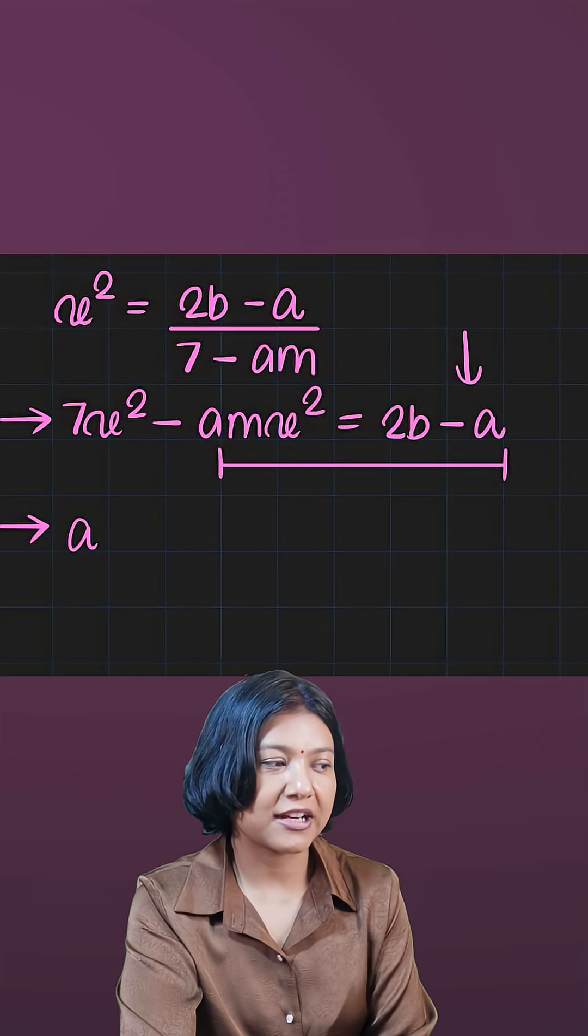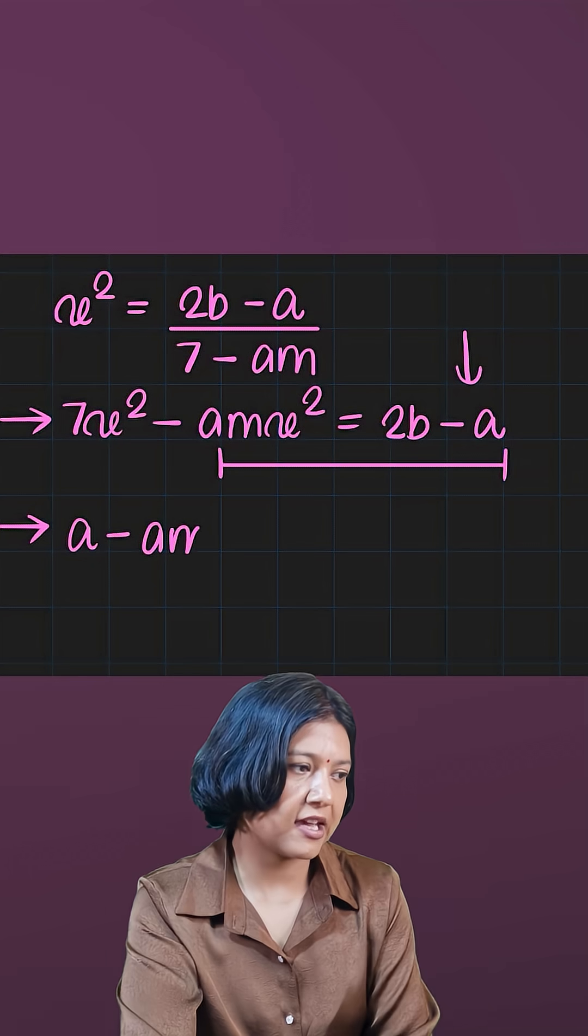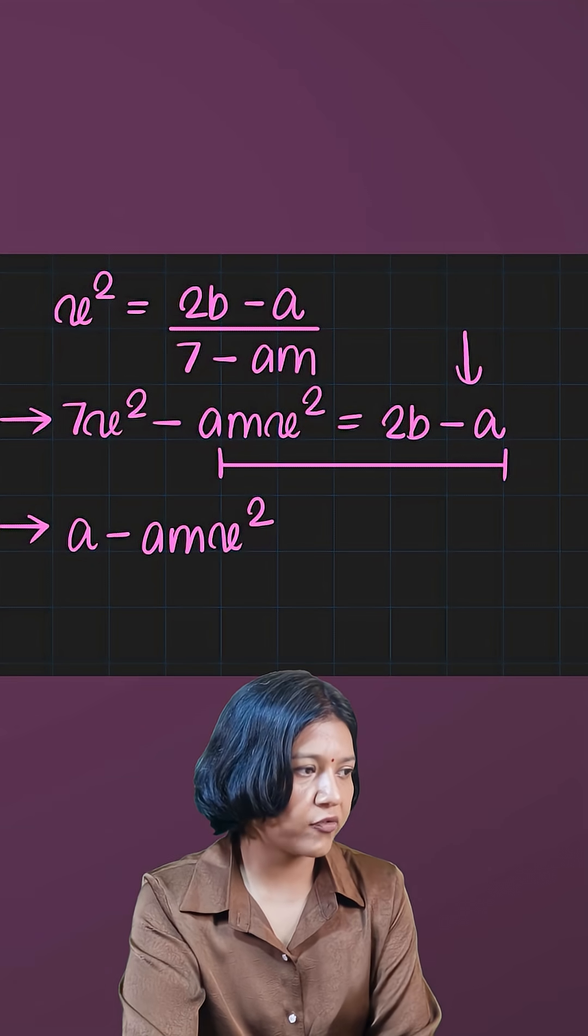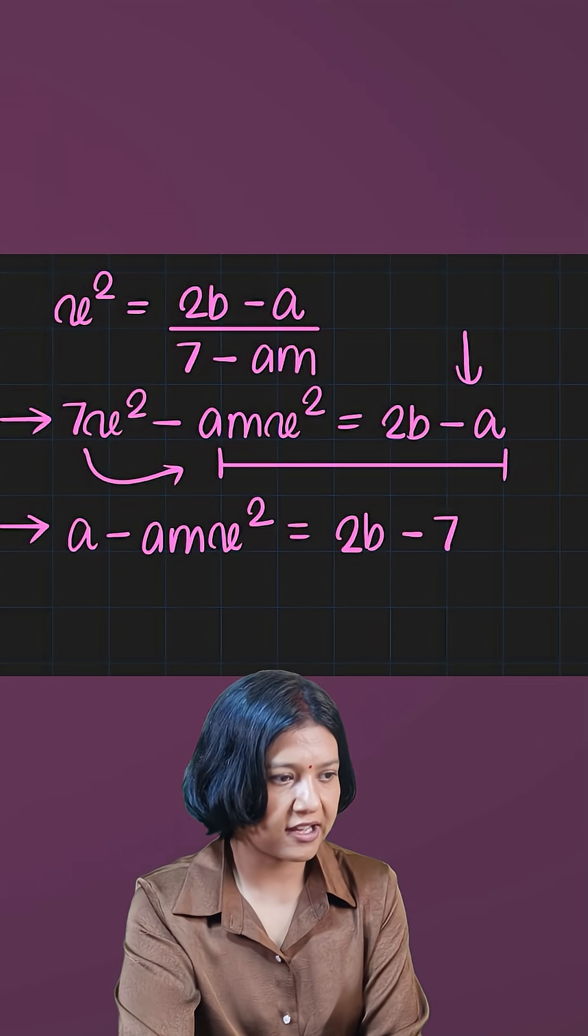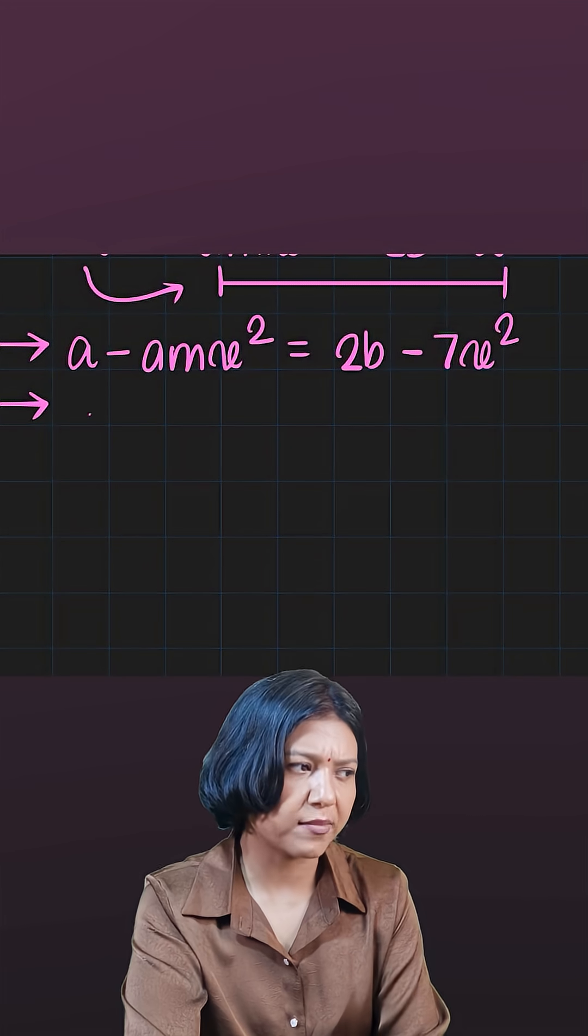By bringing it on the left you get it positive, so a minus amx squared. Likewise, I'll move this term to the other side keeping it negative: 2b minus 7x squared. Now by taking out common, a is a common factor.